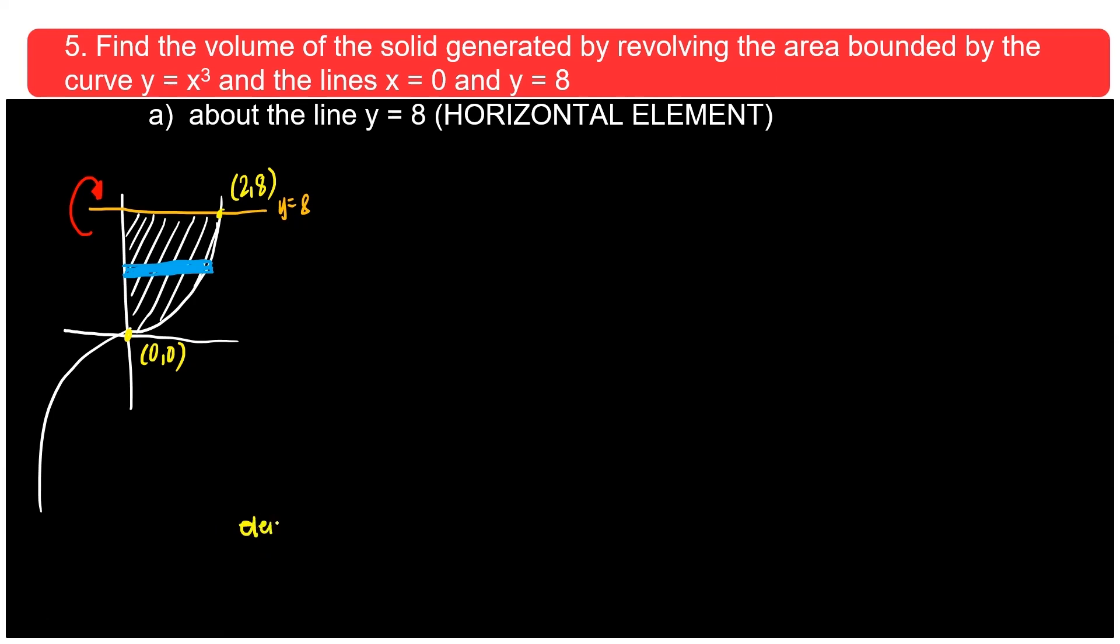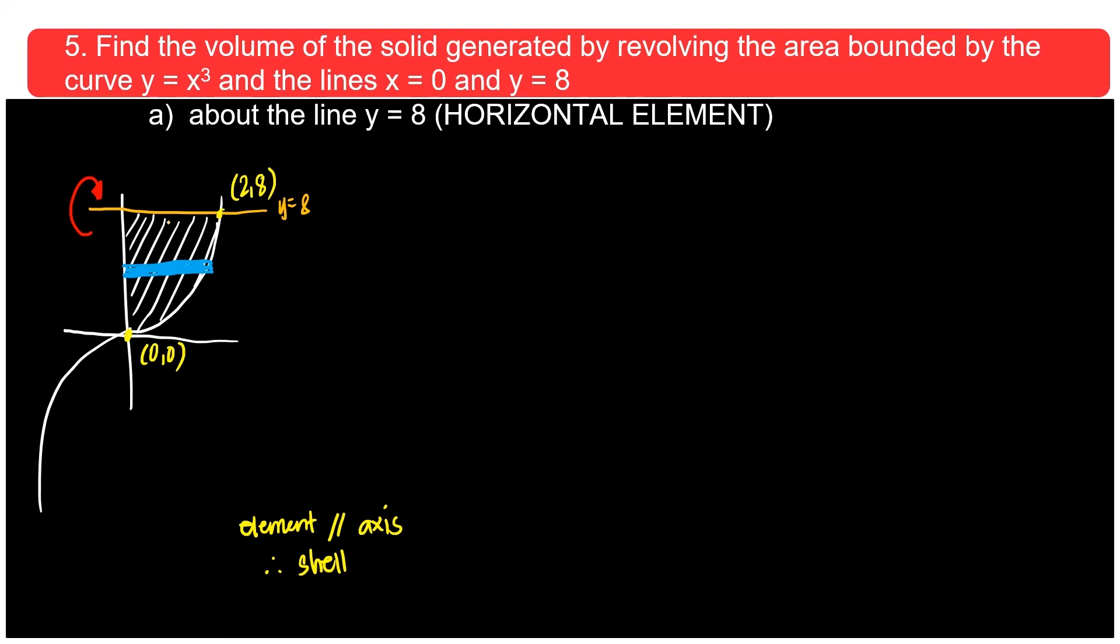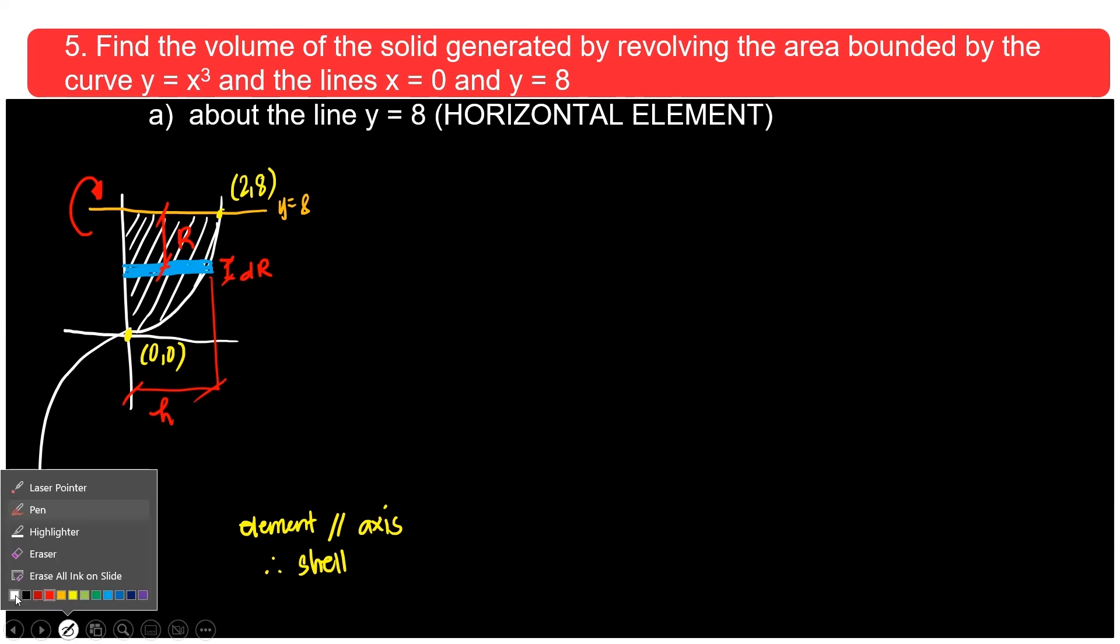Look, element is parallel to axis. So automatically, this is method of shell or cylindrical shells. So since you're revolving it about that, we need to have the parts. So this one, I'll use red instead. That one up to there is your radius. This is your dr. And then the length of your element up to here is your height. So take note that let's table the parts.